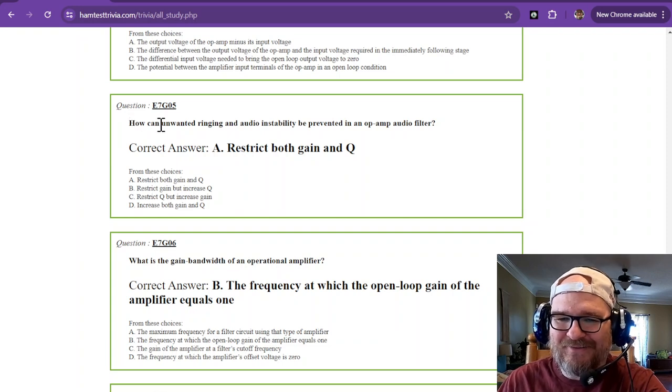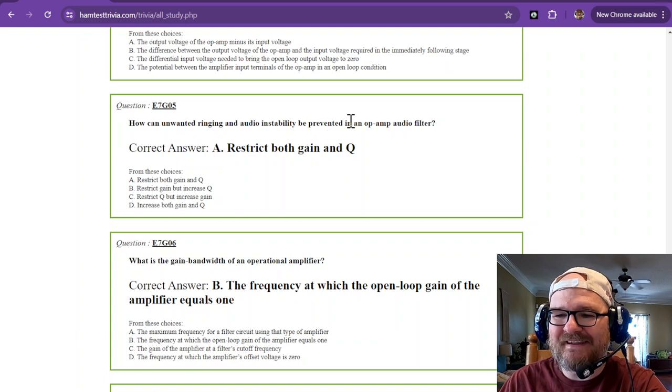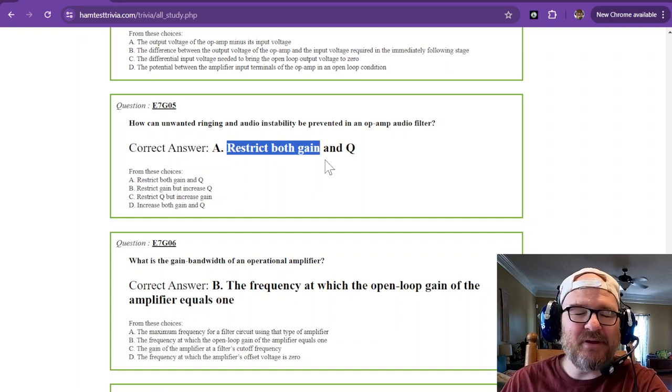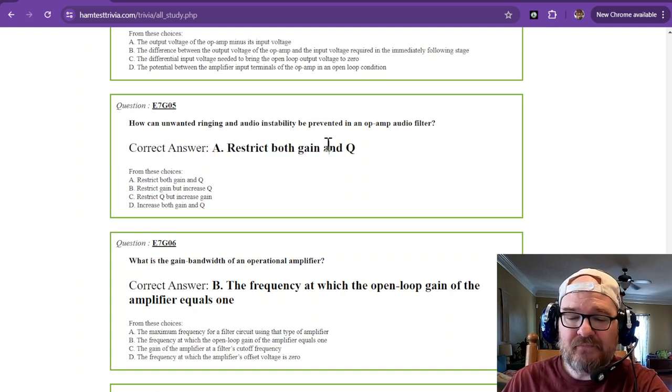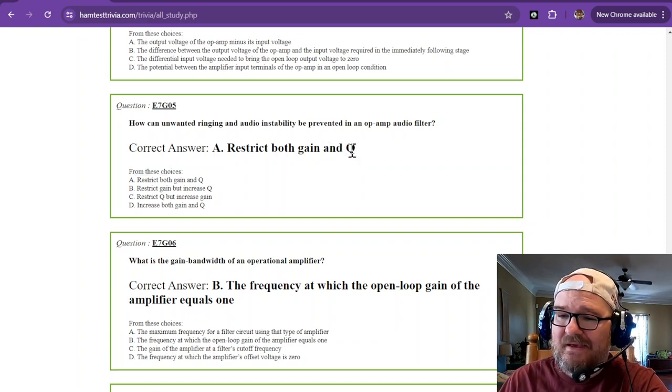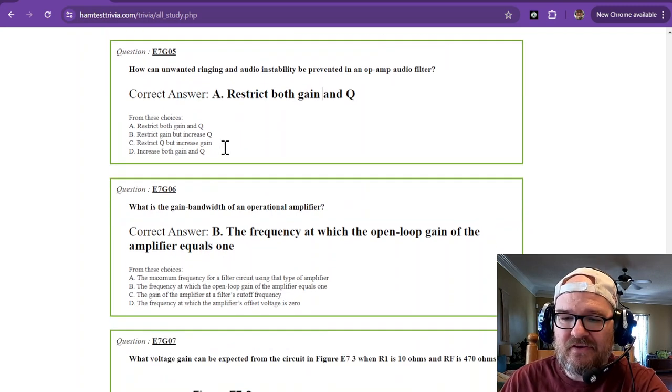How can unwanted ringing and audio instability be prevented in an op amp audio filter? You need to restrict the gain. If you have a high gain, it could become unstable. And the Q. Q is a relationship for an op amp, but just know that it's to restrict both the gain and the Q.